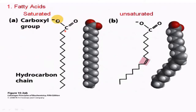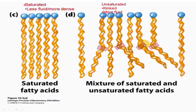A fatty acid consists of a carboxylic group and a hydrocarbon chain. If this hydrocarbon chain has a double bond, it is called an unsaturated fatty acid. If it doesn't have a double bond, it is called a saturated fatty acid. Saturated fatty acids are less fluid because they are more dense — since they don't have a double bond, they don't produce a kink.